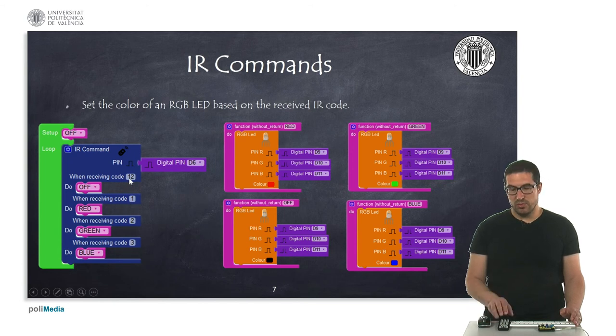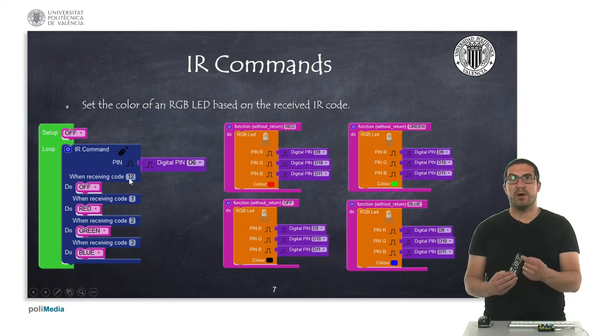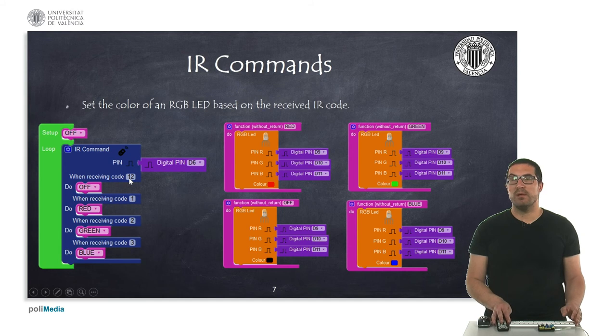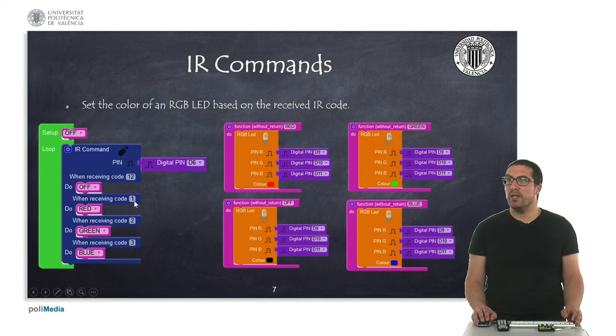The one corresponds to the typical button to power off the TV, this is the number 12, and then this corresponds to the channel 1, 2 and 3. Depending on the code I'm receiving, I'm executing a different task. In particular, here, what I'm doing is, I'm just simply setting the color of the LED.